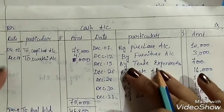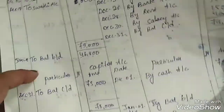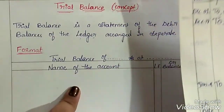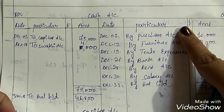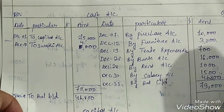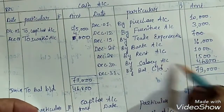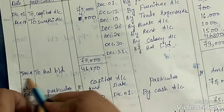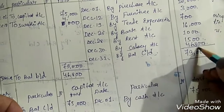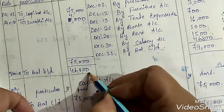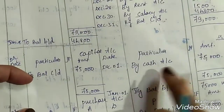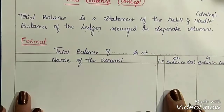For example, this is the ledger problem which we solved in one of our previous sessions. Before coming to trial balance, first of all, make sure that you are clear with the concept of ledger. If you want a video on how to make ledger accounts, you can get the link in the description box below. The trial balance is the list of closing balances of the ledger accounts. For instance, this is a cash account — the closing balance is the carried-down balance which we have brought down. So trial balance is a list of all these closing balances of each account of the ledger.